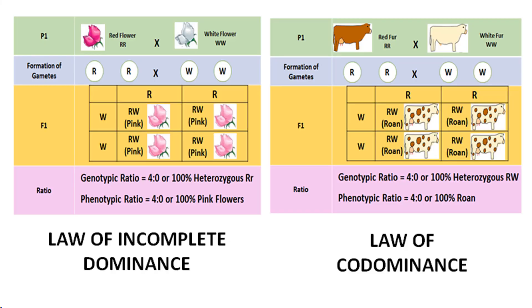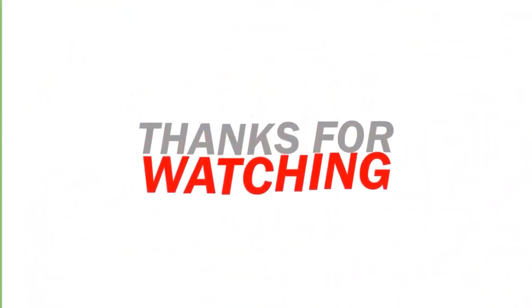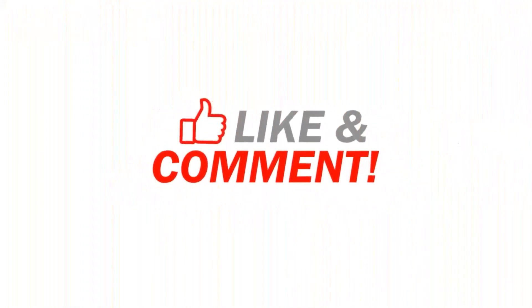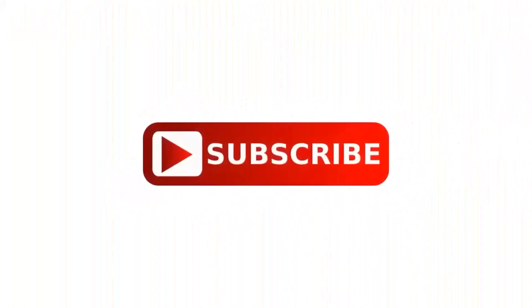The Punnett square for the laws of incomplete dominance and codominance can also be written in this way. If this is your first time watching my video, make sure you hit the subscribe button. Thank you for watching.